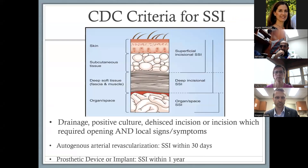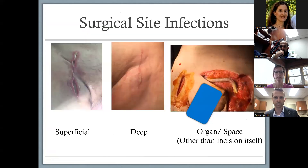It's worth reviewing the CDC criteria for surgical site infections. They're ultimately classified into superficial infections, deep surgical site infections, and so-called organ or space infections, all with requirements for symptoms and physical exam signs. For autogenous arterial revascularization, we measure SSI occurring within 30 days. But when talking about a prosthetic device or implant such as a prosthetic bypass, we should be calculating this rate up to one year.